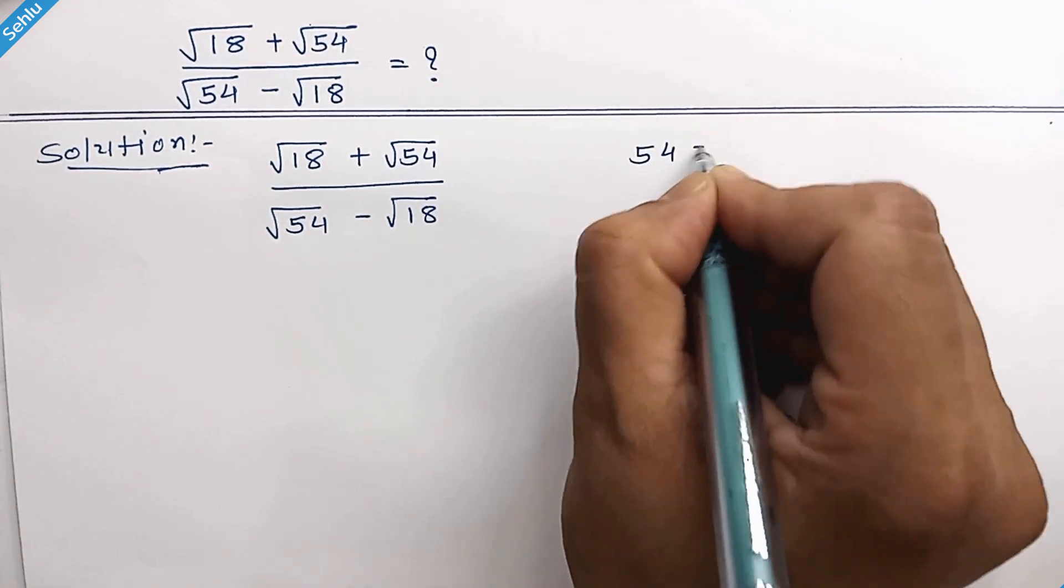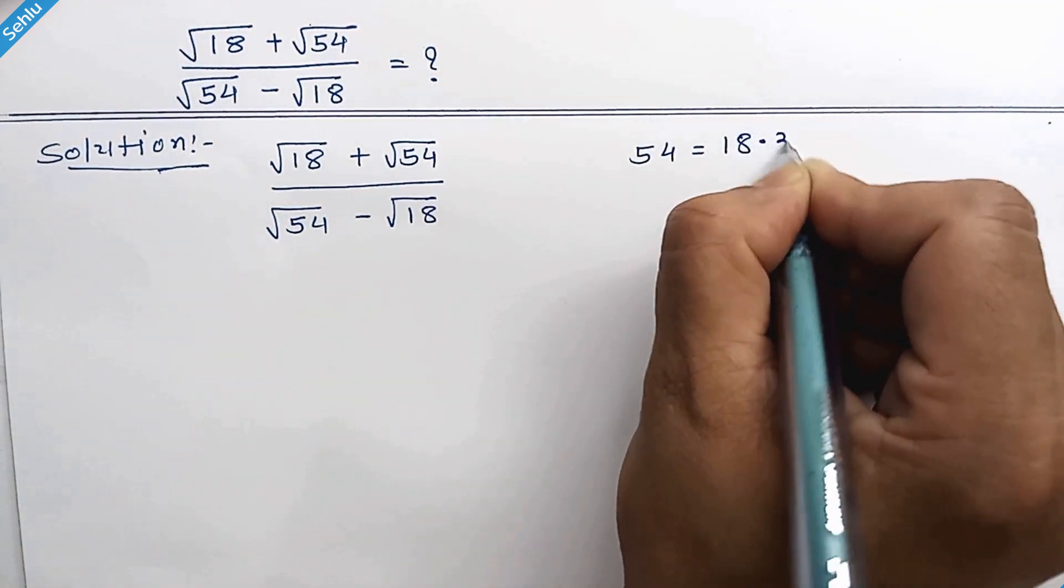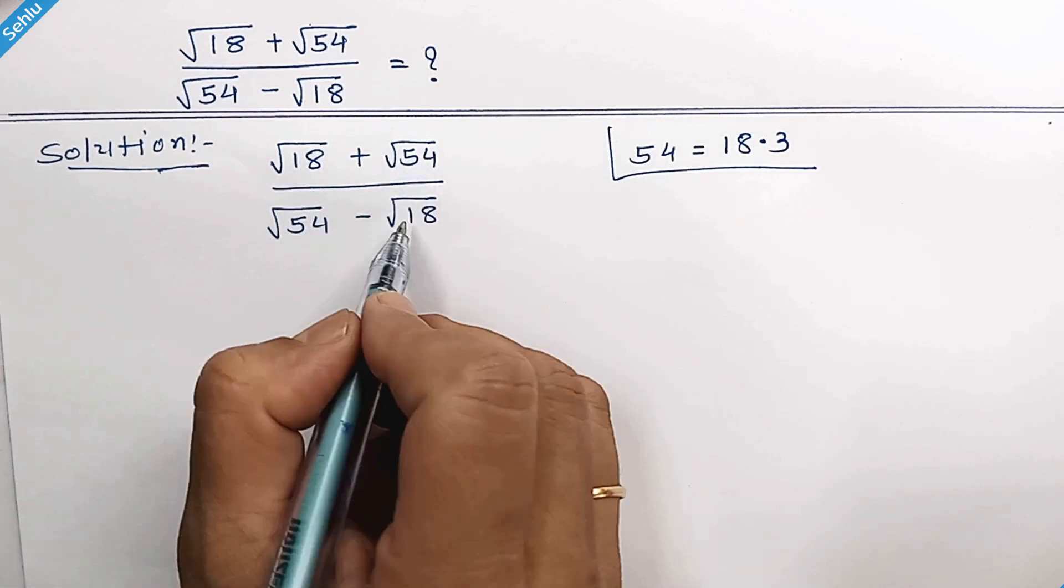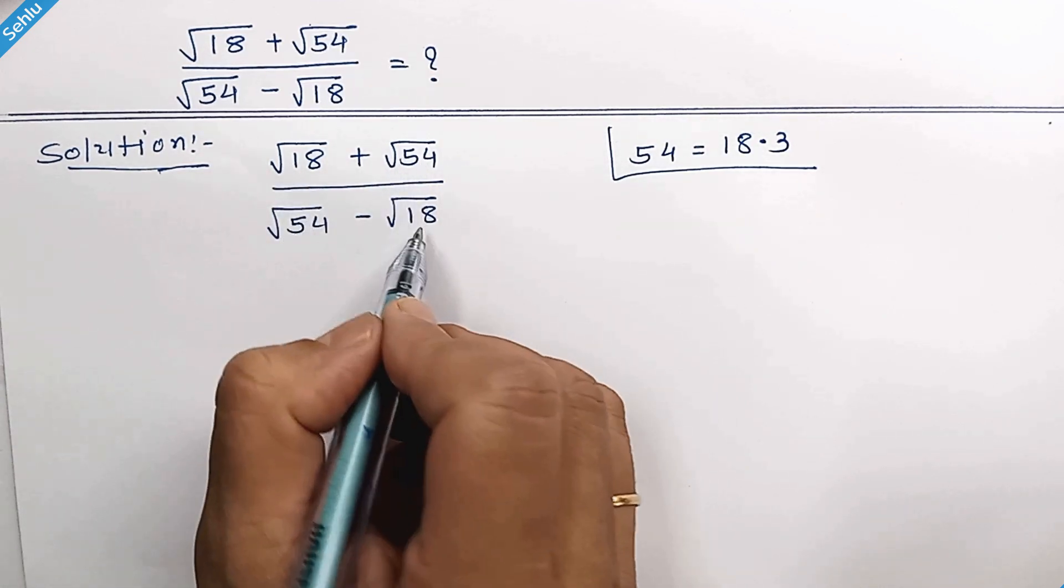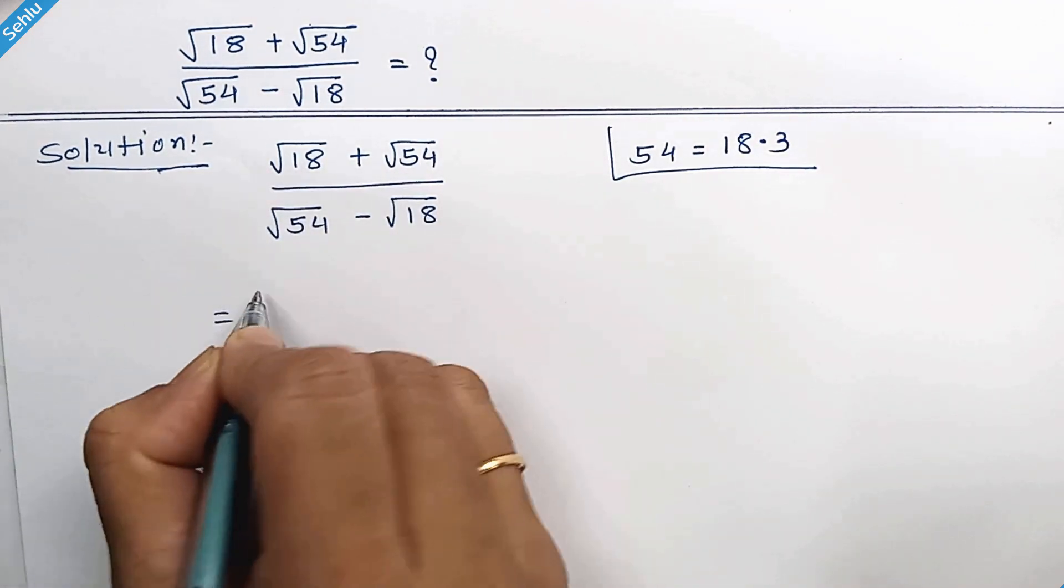54 is 18 times 3, so we can factor out 18 from here and here.